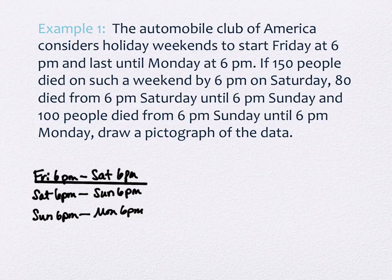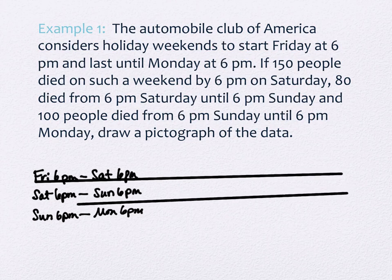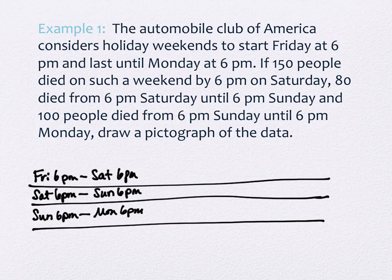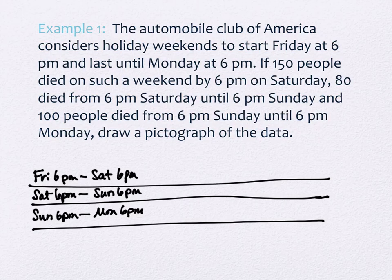A pictograph is not a very complicated graph. It literally just writes the categories down and draws a picture. I don't want my picture to represent one person because that means I need to make 150, 80, and 100 images. So I need to create a key that allows me to make fewer images by making one image worth more than one person. I can do this in a couple of ways.